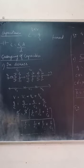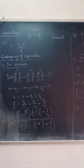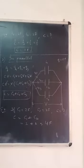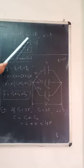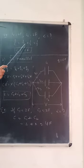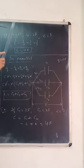So in the case of series, capacitances are added in reciprocal — they add in reciprocal form. For example, if C1 = 2 farad and C2 = 2 farad, then 1/C = 1/2 + 1/2 = 1, so C = 1 farad.